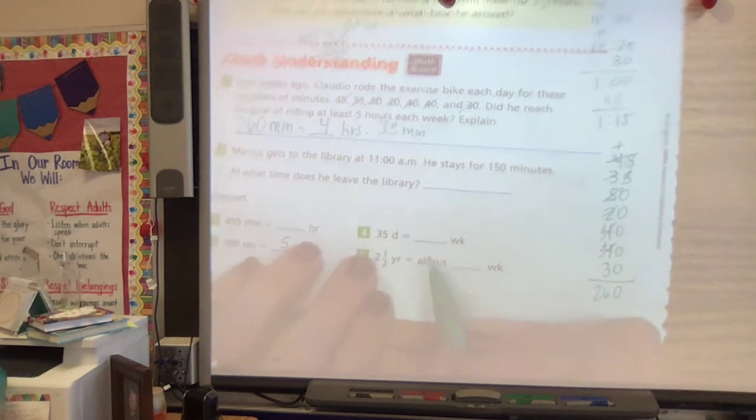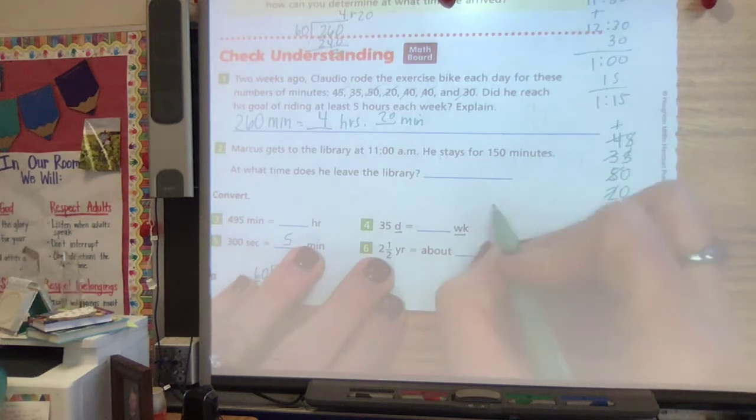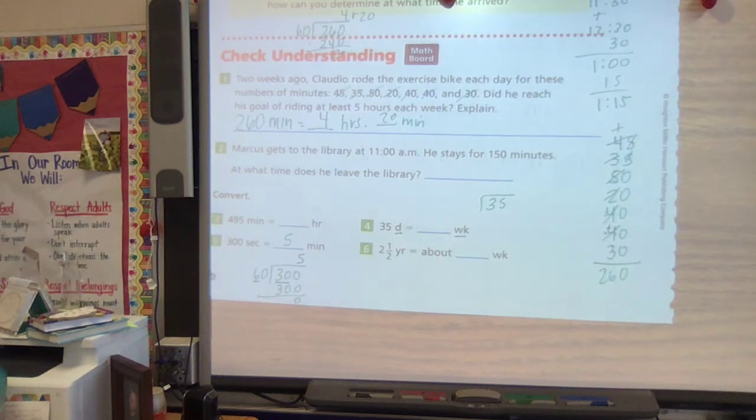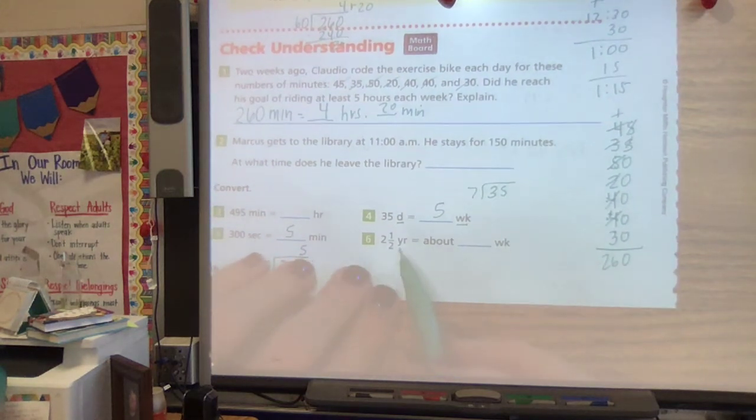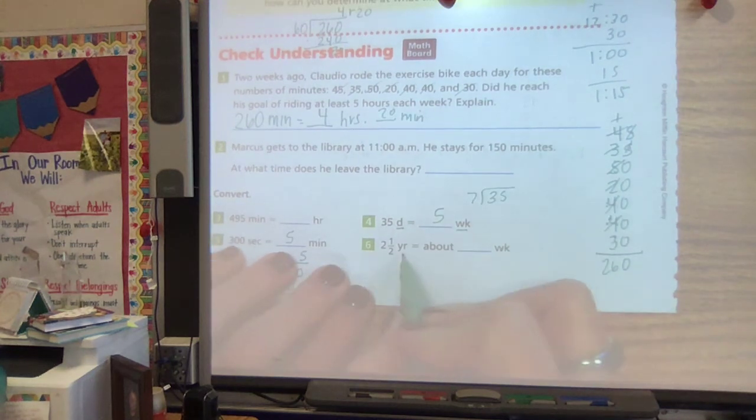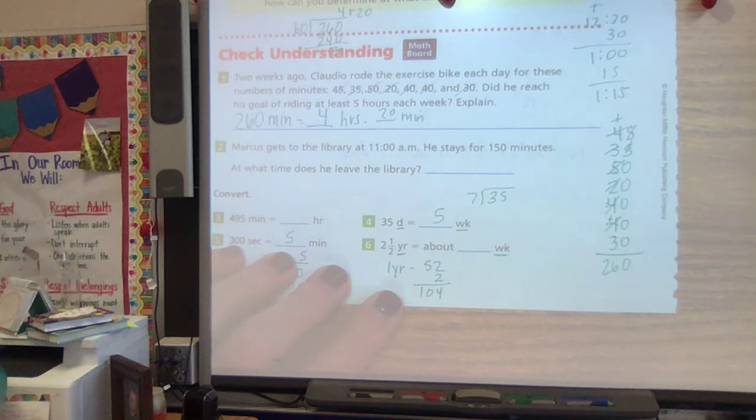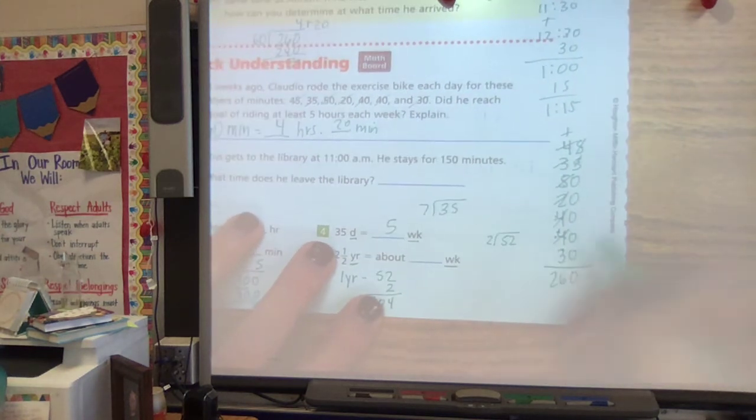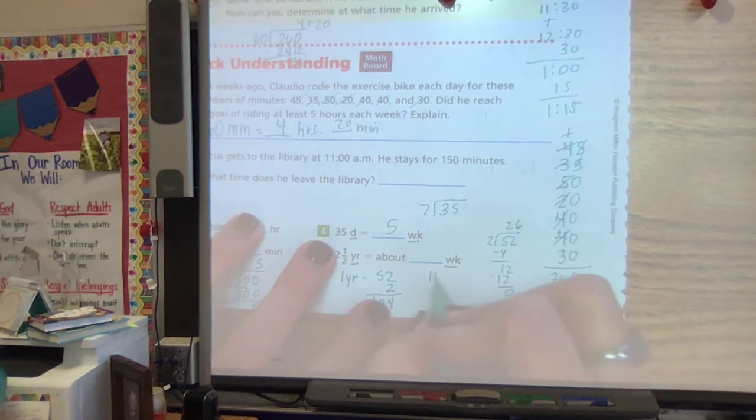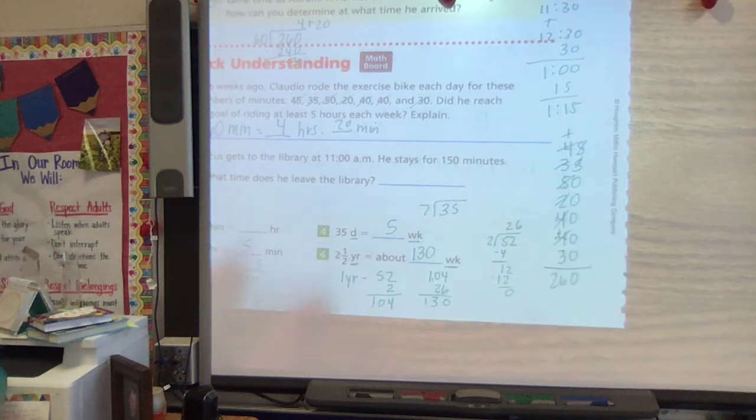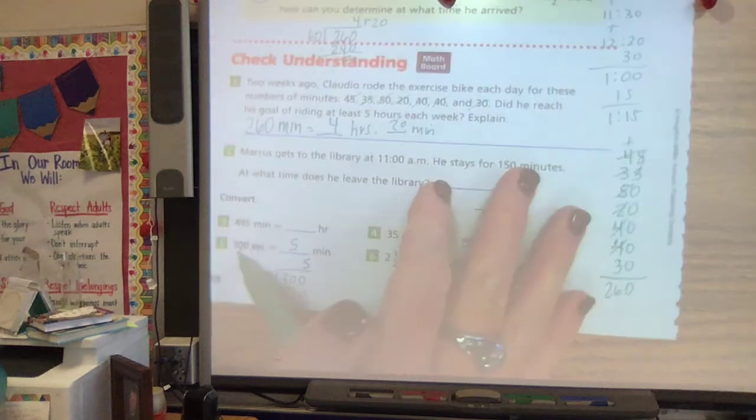All right, let's think about days and weeks. We're going from smaller to bigger. So I know I'm dividing. And what do I know about days and weeks? I know that there are seven days in a week. And so that would be five weeks. Let's think about this. Two and a half years is about how many weeks. So here we're going from bigger to smaller. So we're going to multiply. I know that one year is about 52. So two years is going to be 104. And then if I'm going to do that half, well, I need to know what half of 52 is. Two goes into five two times and two goes into 12 six times. So if I have 104 plus 26, that's going to give me 130 weeks.